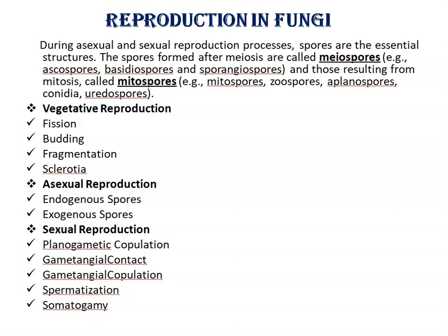The spores formed after meiosis are called meiospores. Examples of meiospores are ascospores, basidiospores, and sporangiospores. Those resulting from mitosis are called mitospores. Examples of mitospores are zoospores, aplanospores, conidia, uredospores, etc.